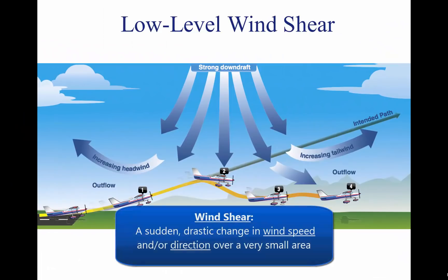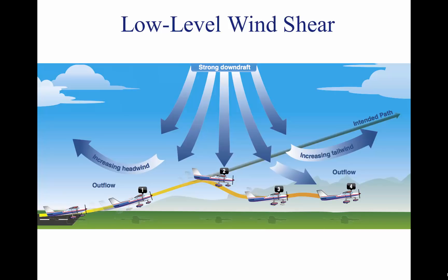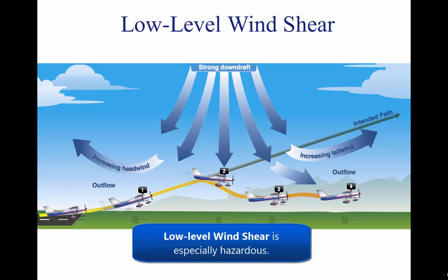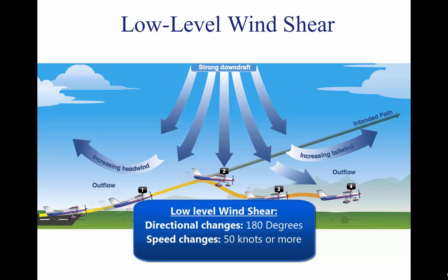Windshear is a sudden, drastic change in wind speed and/or direction over a very small area. Windshear can subject an aircraft to violent updrafts and downdrafts, as well as abrupt changes to the horizontal movement of the aircraft. While windshear can occur at any altitude, low-level windshear is especially hazardous due to the proximity of an aircraft to the ground. Directional wind changes of 180 degrees and speed changes of 50 knots or more are associated with low-level windshear.